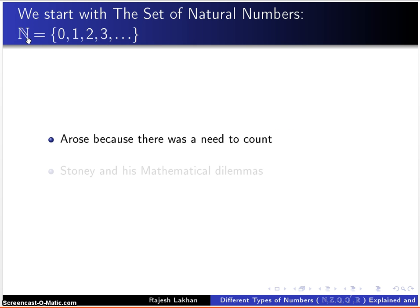We start with the set of natural numbers. Let's assume there was a rule because there was a need to count, so we needed to count things. Natural numbers go from 0, 1, 2, 3, and these dots mean that they continue without end. It goes until infinity.